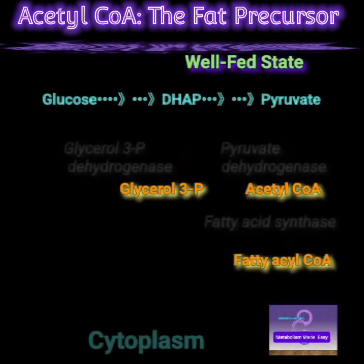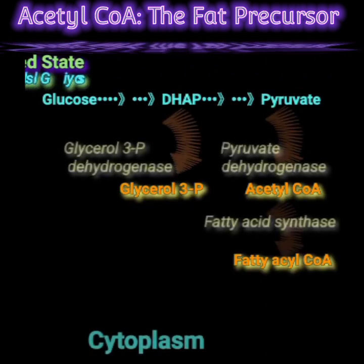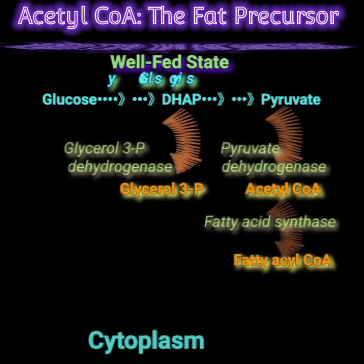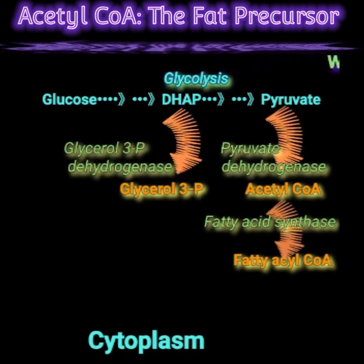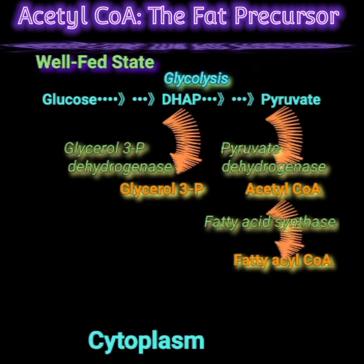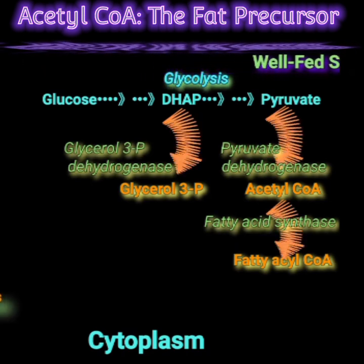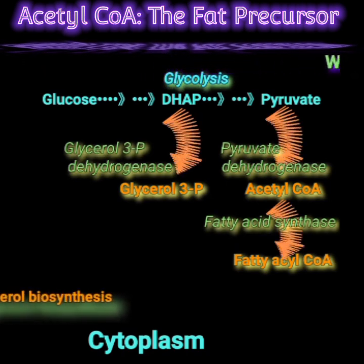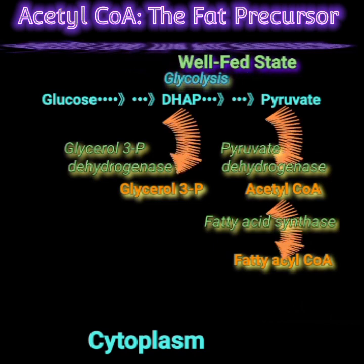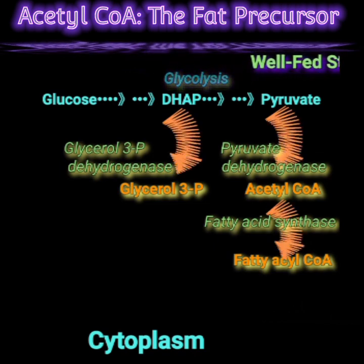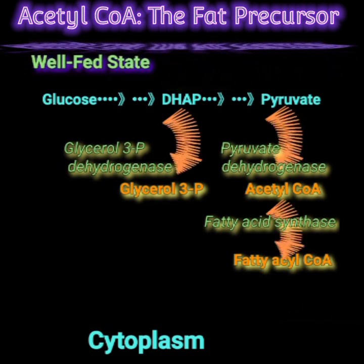Glucose provides two important precursors needed for the synthesis of triacylglycerol. The first is dihydroxyacetone phosphate, which provides the glycerophosphate backbone for the synthesis of triacylglycerol. The second is pyruvate, which provides the acetyl-CoA for the synthesis of fatty acids.